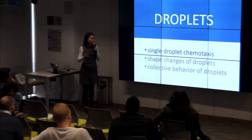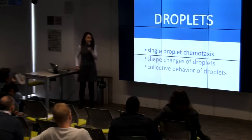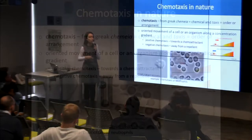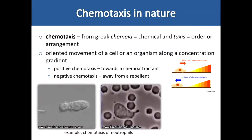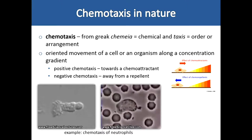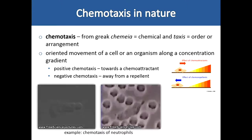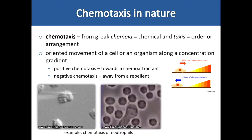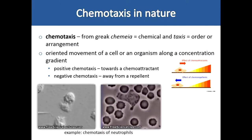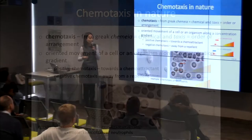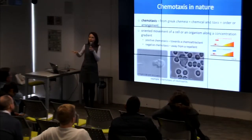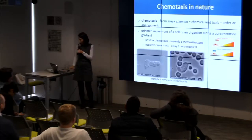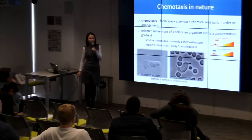Let's start with chemotaxis. Since many of you have various backgrounds — some computer scientists — I will say a few words about chemotaxis, which is a very common phenomenon in nature. Living cells and organisms are able to sense gradients of chemicals and respond by moving either towards the chemical signal — positive chemotaxis — or away from something harmful.